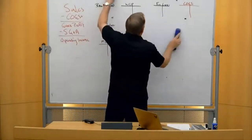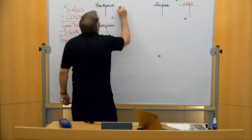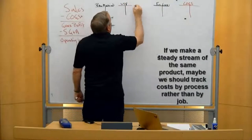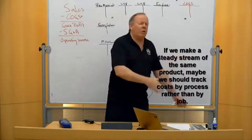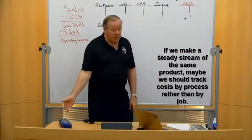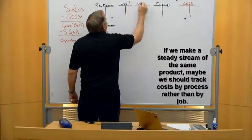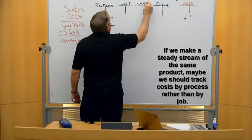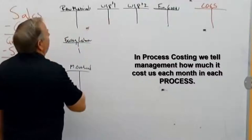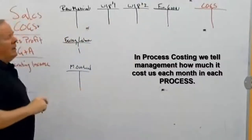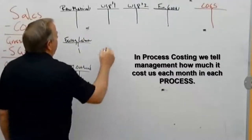If we make a steady stream of the same thing over and over again, instead of job order costing we might use process costing. There's no rule that says you must use one or the other, but if we're making the same stuff repeatedly, the best approach may be to track costs by process. Instead of every job, every month we prepare a report telling management how much it should cost to make our stuff in process one and process two.